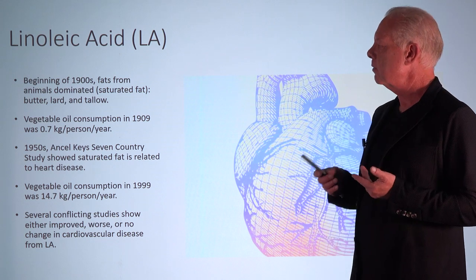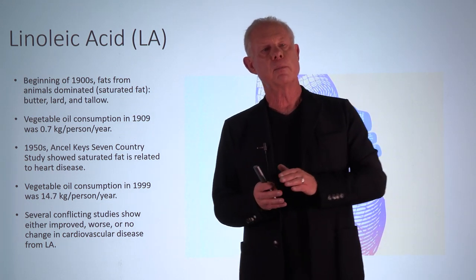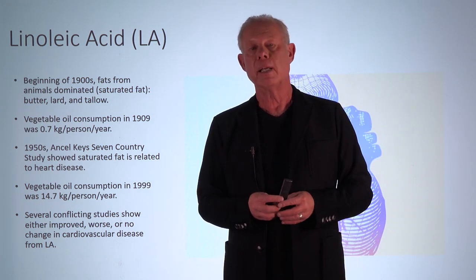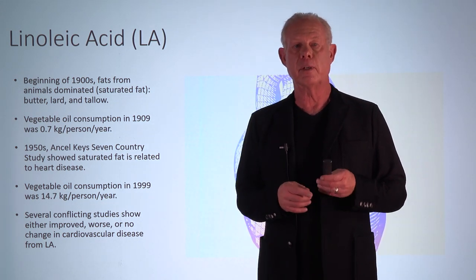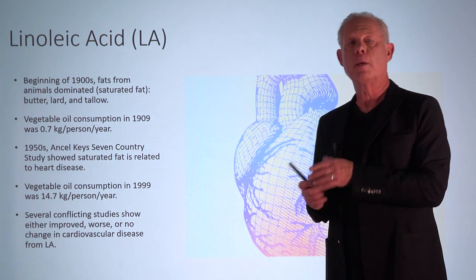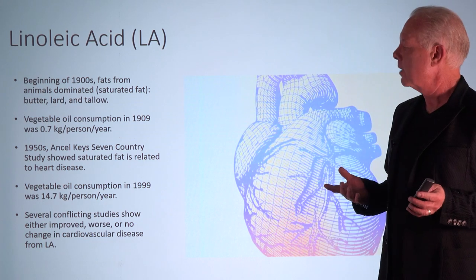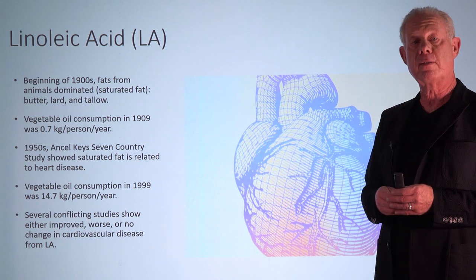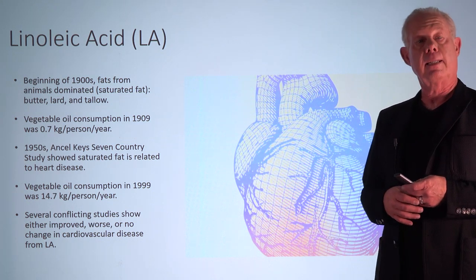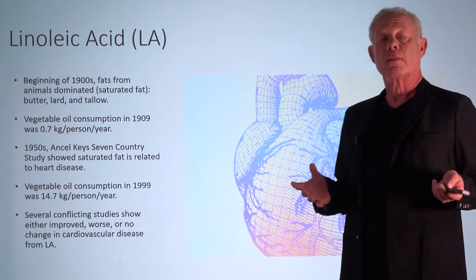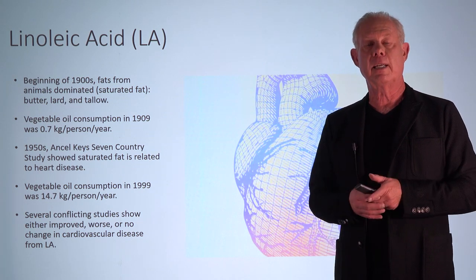Why the increase? Ancel Keys in the 1950s did what he called the Seven-Country Study. He looked at countries around the Mediterranean region compared to more northern European latitudes, where higher saturated fat consumption was associated with increased heart disease. He speculated that replacing saturated fat with polyunsaturated fat — as found in vegetable oils — could reduce heart disease. That's why consumption rose to 14.7 kg by 1999. Did it work? The results are conflicting — some studies show improvement, others don't. It's a much more complicated answer than first suspected.